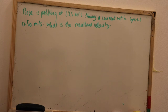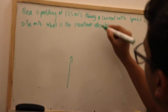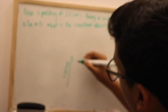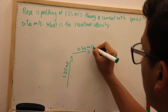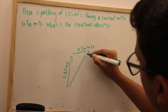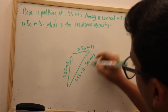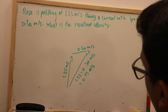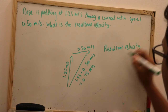The following question asks us to find Rosa's resultant velocity as she is paddling through water with a speed of 1.25 meters per second and a current speed of 0.50 meters per second. We draw arrows representing Rosa's velocity and the current's direction. Subtracting Rosa's velocity with the current velocity: 1.25 minus 0.50 equals 0.75 meters per second. So Rosa's resultant velocity is 0.75 meters per second.